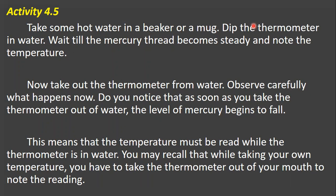For this activity, you have to take some hot water in a beaker or a mug. Next, dip the thermometer in the water. The thermometer contains mercury inside. Wait until the mercury thread becomes steady — meaning it stops moving — and then note the temperature of the water.